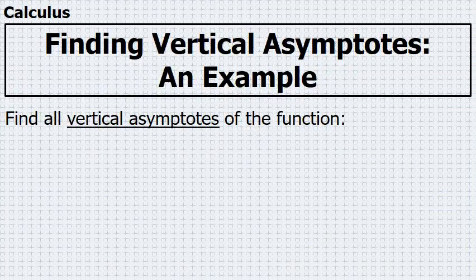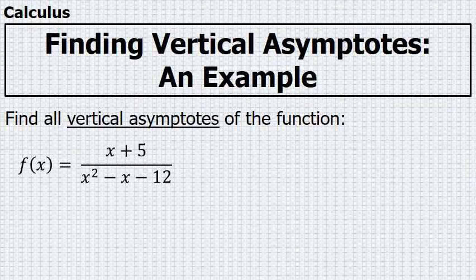In this problem, we're being asked to find all vertical asymptotes of the function f(x) = (x+5)/(x²-x-12).